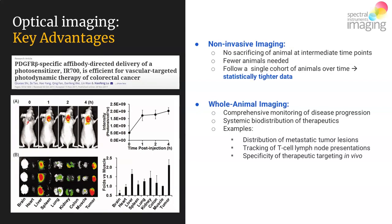There are a couple more key advantages to optical imaging. First: non-invasive imaging. When acquiring your data, you don't need to sacrifice the animal at intermediate time points. You can follow the same cohort of animals over time by non-invasively imaging the optical data penetrating through their tissue. This leads to fewer animals being used, which is always a good thing. It also allows a single cohort of animals to be followed over time, eliminating intergroup variability that would occur in traditional constructs where replicate groups are sacrificed at various time points. With a single cohort, you have statistically tighter data, which makes for better science.